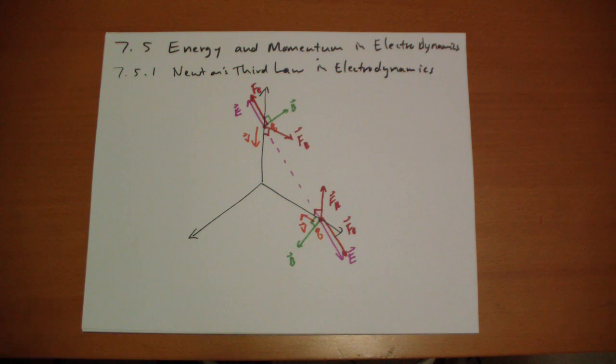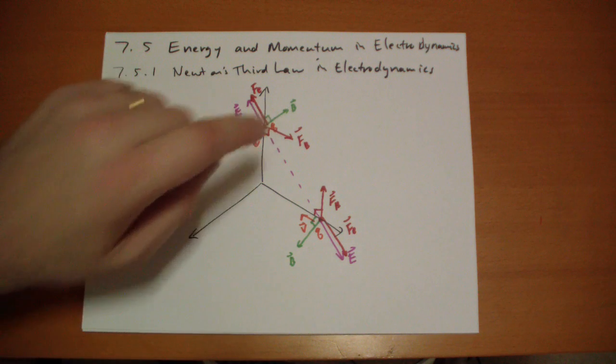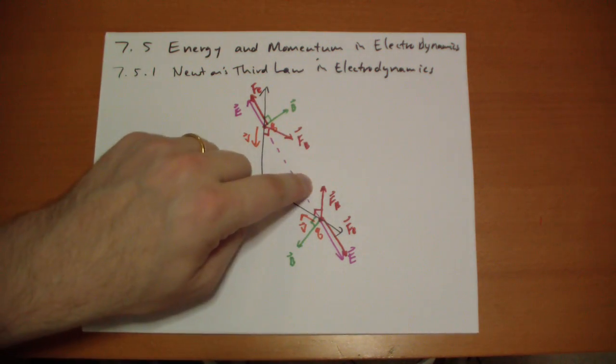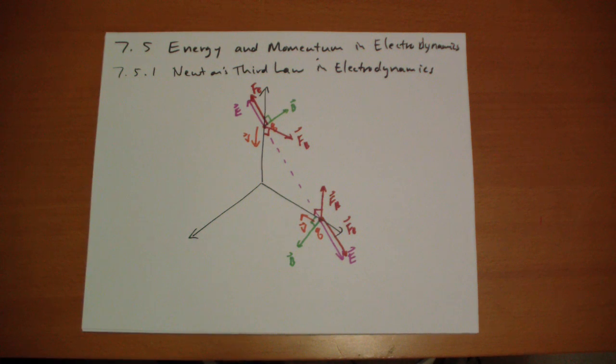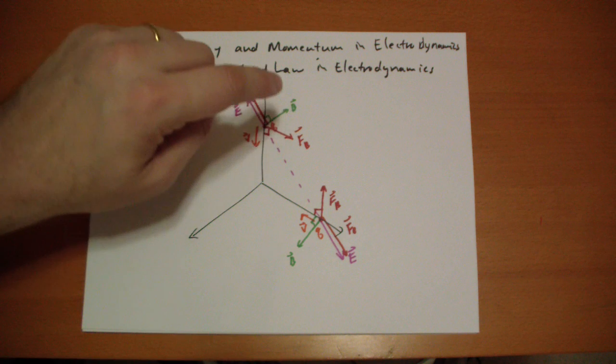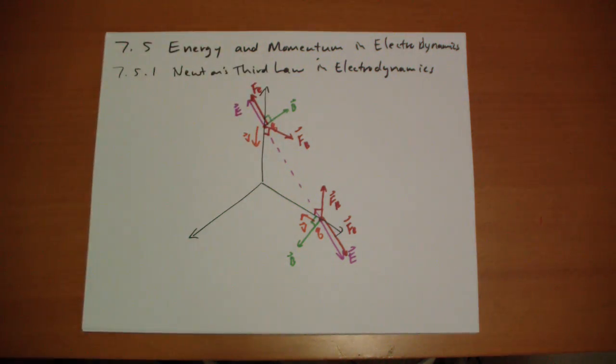The way I like to look at it as well is that the charges never interact with each other. That's not how it works. The charges interact with fields and the fields interact with the charge. And if you think about it that way, then you have to think of the momentum stored in the fields. There's a momentum transfer from the charge to the field and then a momentum transfer from the field to the charge.